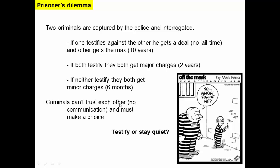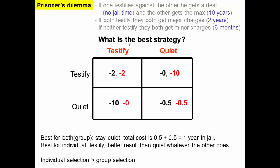Criminals generally can't trust each other and are held separately, so there's no communication. Each of the two criminals has to decide independently whether to testify or stay quiet, making the decision rationally based on expected outcomes. When we think about game theory payoff matrices, we put them in boxes: on one axis are the decisions of one prisoner — testify or be quiet — and the effects depend on what the other prisoner does.